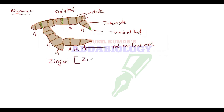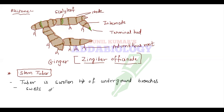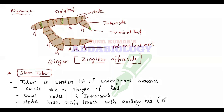The scientific name for rhizome ginger is Zingiber officinale. The next one is stem tuber. A tuber is the swollen tip of an underground branch. It swells due to storage of food under unfavorable conditions. They show the presence of nodes and internodes, and nodes have scaly leaves with axillary bud.